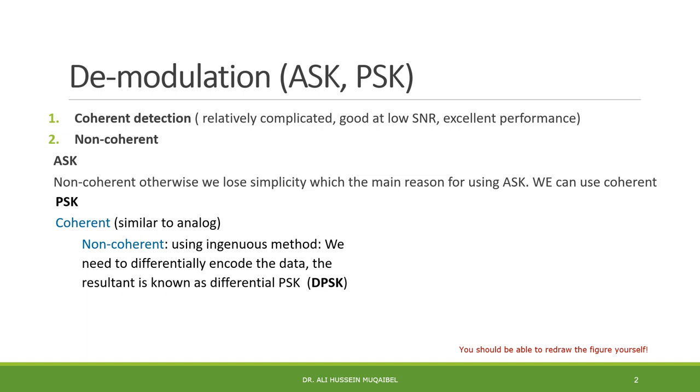But it can be also received non-coherently using an ingenious method. How? Remember, in digital, we are just sending either, for example, in the case of binary, we either send 0 or 1. Instead of locating or generating a local carrier, we can use the previous data as we can see here in the table, or the diagram, as our carrier.